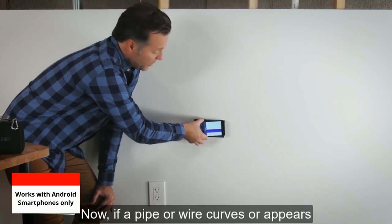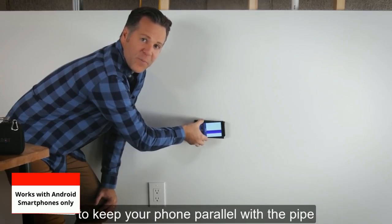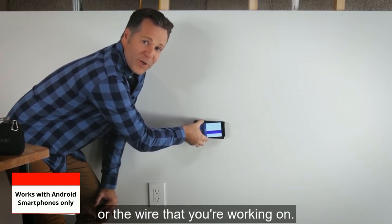If a pipe or wire curves or appears horizontally like this, you'll get the best results if you rotate the device to keep your phone parallel with the pipe or wire that you're working on.